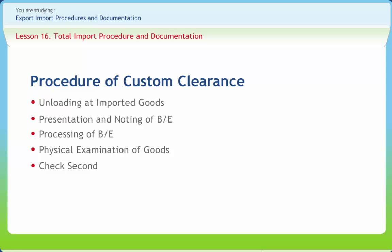Where the AO is not able to identify goods properly, or there is insufficient information about the composition, functions, or classification of the goods in question, the AO marks the papers to the dock superintendent for physical examination first. This is known as the 'check first' system. At any stage, if it is found that the goods are prohibited or the importer has intended to import in violation of relevant acts, penal proceedings may be initiated and goods are liable to confiscation under Section 11. The adjudication authority has discretion to allow release to the importer on payment of a fine, or to confiscate the goods.